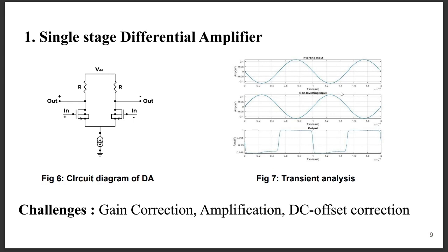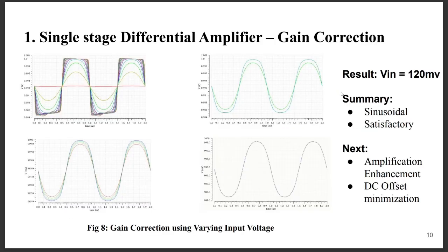Starting from here, we will be discussing about our project course. This is an industry general single stage differential amplifier. As you can see, this is a transient analysis which obviously is not a very good result. The three main things we are to perform in this analysis are: input correction, amplification, and DC offset correction. For gain correction, we have varied the input voltage and checked the resulting output voltage.